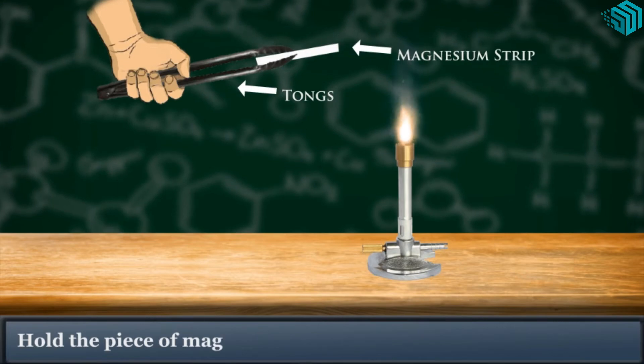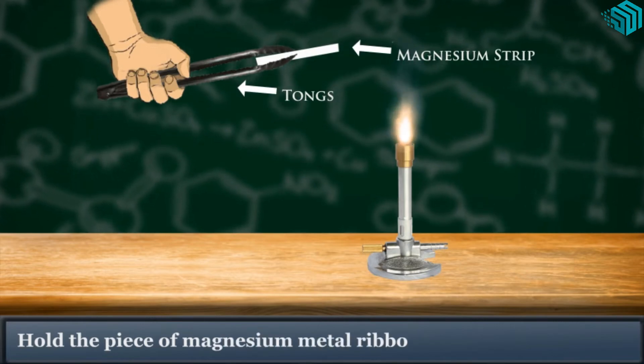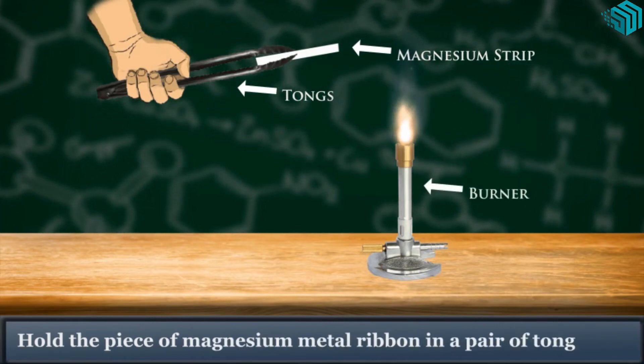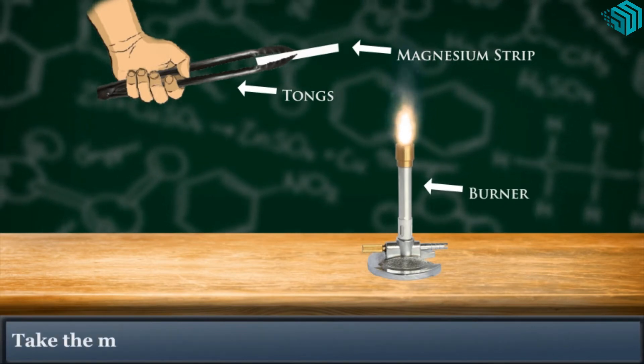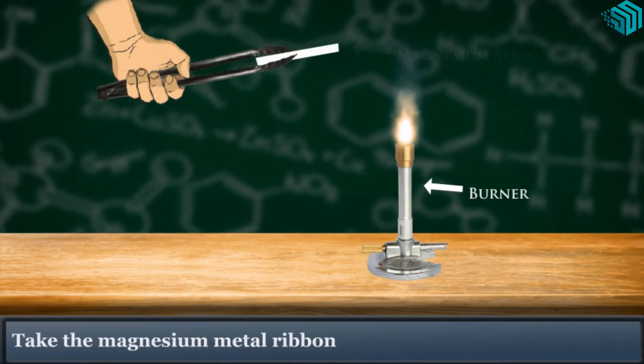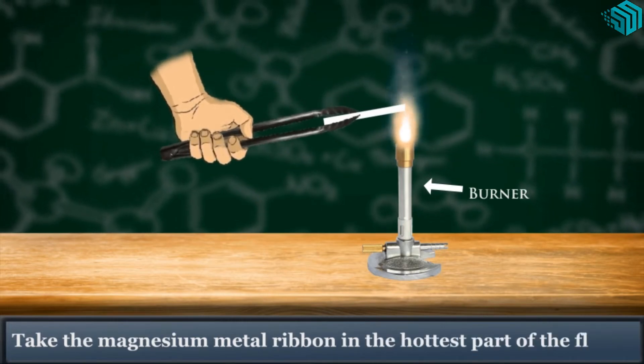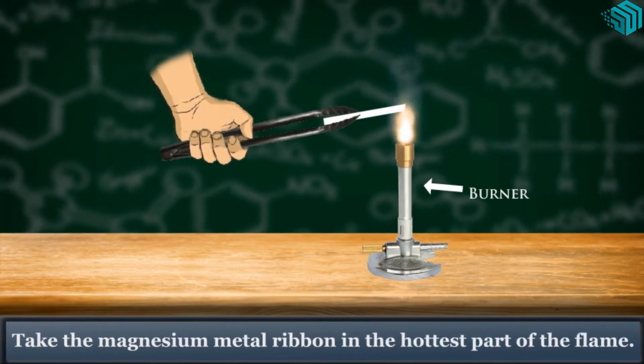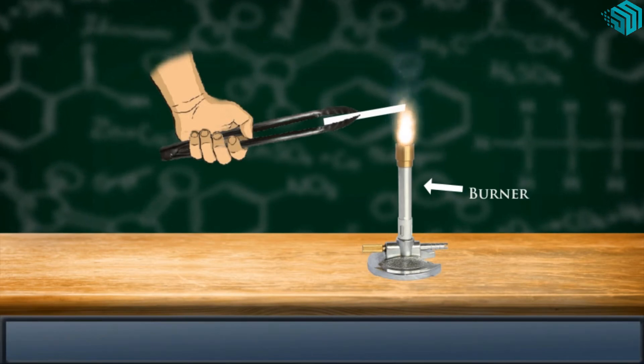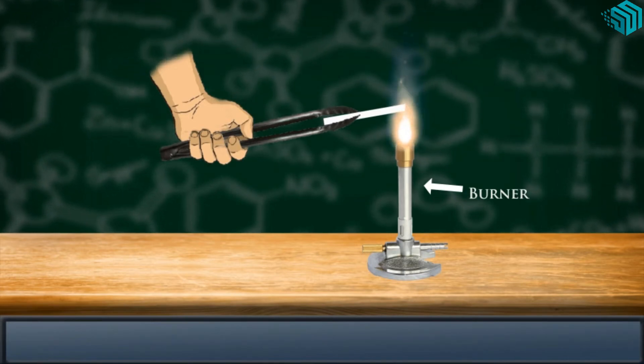Hold the piece of magnesium metal ribbon in a pair of tongs. Take the magnesium metal ribbon in the hottest part of the flame. It will soon catch fire and emit a very bright light.